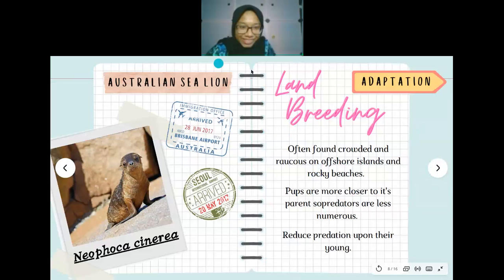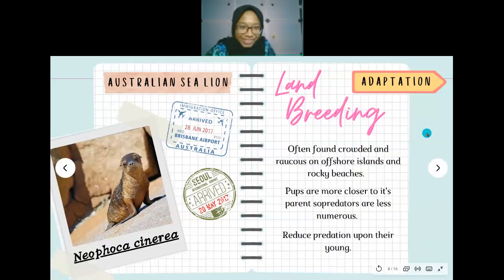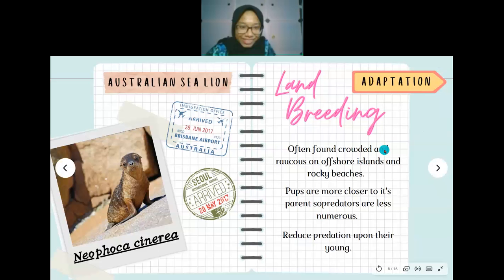For marine animals in Rocky Shore ecosystems, the first is the Australian sea lion, Neophoca cinerea. Its unique feature is that it breeds on land. This is important because pups stay closer to their parents, reducing predation. Land breeding on rocky shores is often found on crowded offshore islands and rocky beaches, and the whole population size reduces predation upon the young.